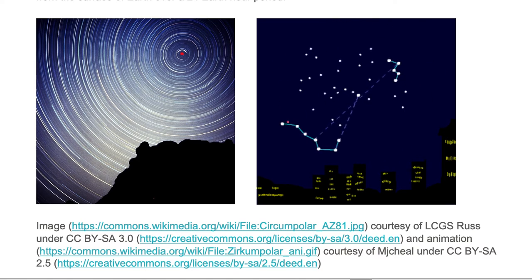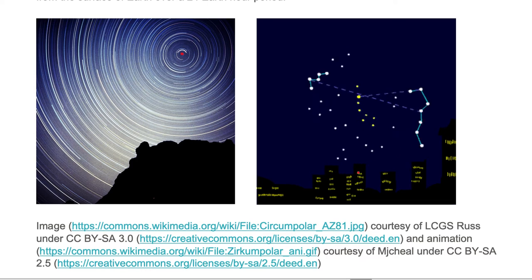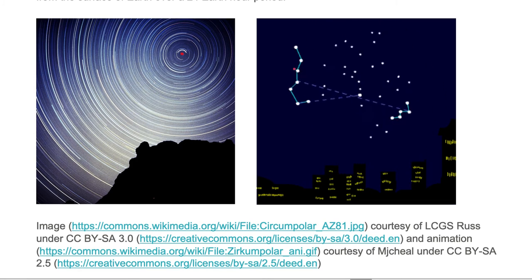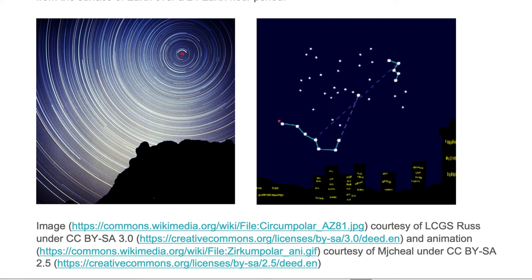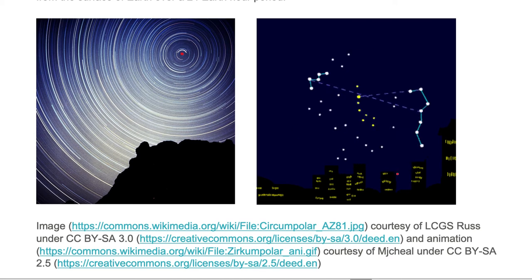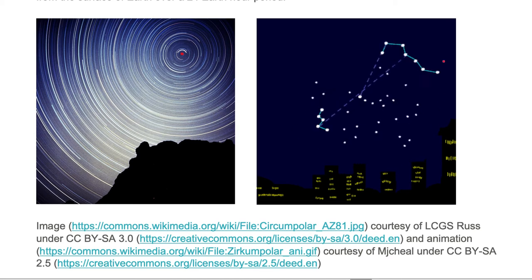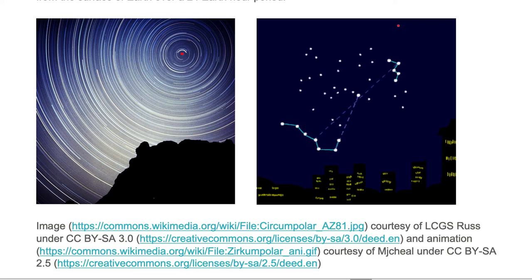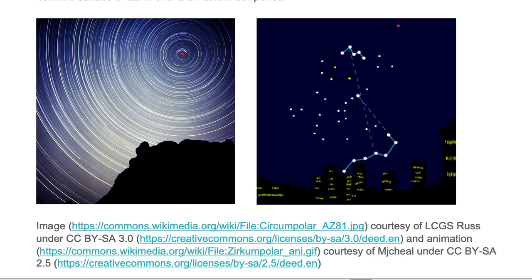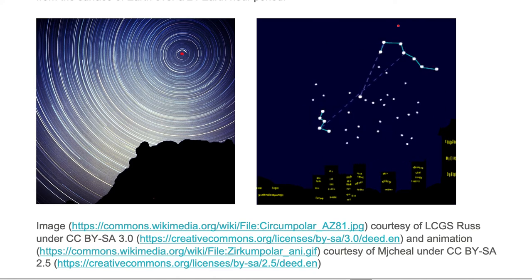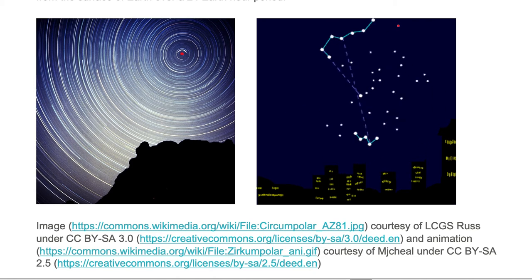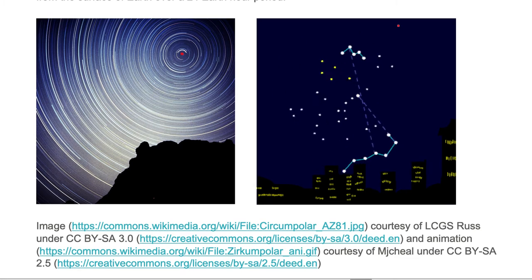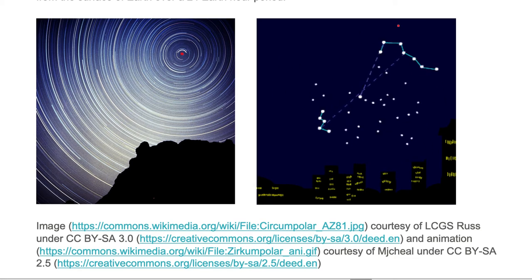If you look closely at the end of the handle of the Big Dipper, you can see that the handle dips below the horizon or behind the buildings and comes back up. So that would not be a circumpolar star — it would be considered a rise-and-set star because it appears to set into the ground and it appears to rise up from the ground.